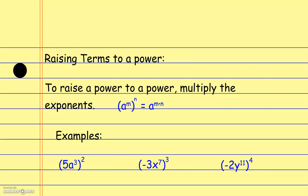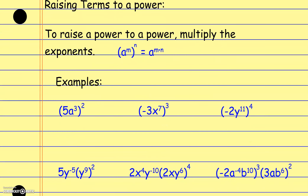When we raise something to a power, we multiply the exponents. So a to the m, all raised to the n, becomes a to the m times n. Numbers react to exponents the same way they always have. For example, 5a to the third power all raised to the second: 5 squared is 25, and a to the third raised to the second means multiplying exponents, giving a to the sixth. So the answer is 25a to the sixth.